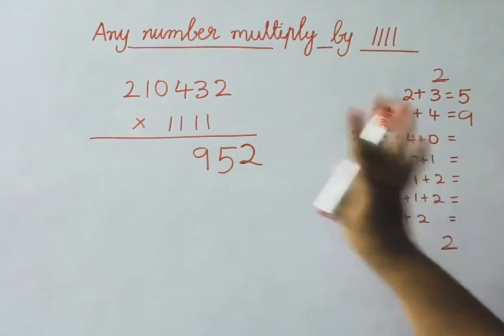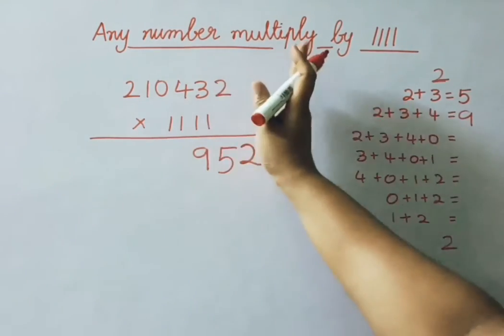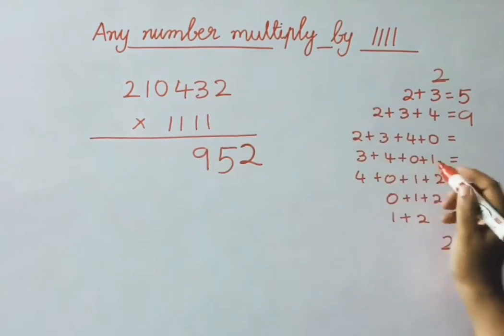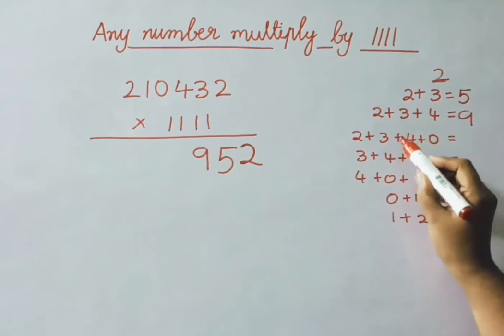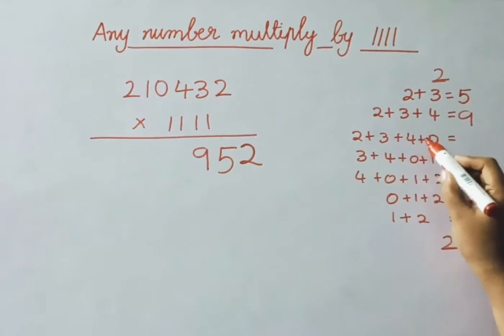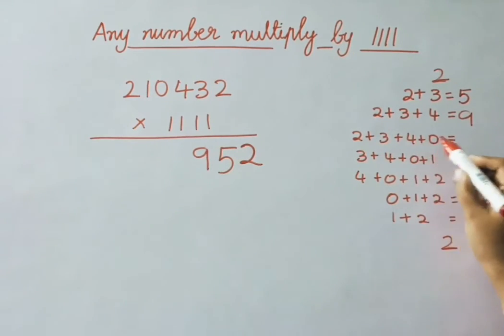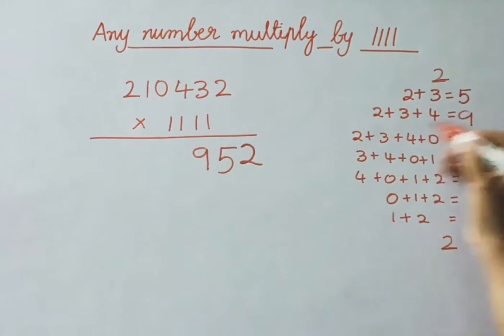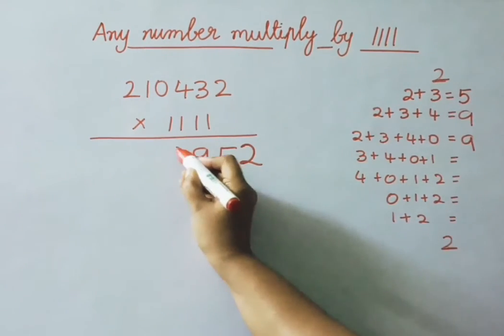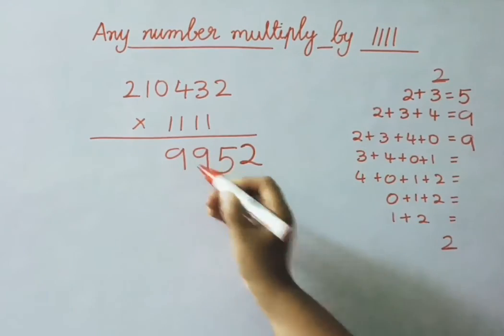Next, 4 digits from right to left we have to add: 2 plus 3 is 5, 5 plus 4 is 9, 9 plus 0 — again you will get 9. Write down in the answer.